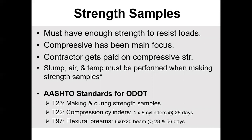Now let's talk about strength samples. You must have enough strength to resist load. Compressive strength is what we've focused on for years, and contractors often get paid on it — meet the strength, get paid. Slump, air, and temperature must be performed when making strength samples. AASHTO standards for ODOT: T23 for making and curing sample cylinders, T22 for compressive strength. Making/curing and breaking are two different tests — one for cylinders and flexural beams, the other specifically for breaking each.